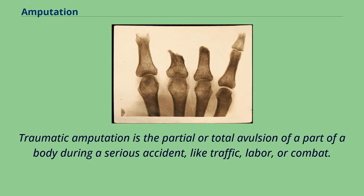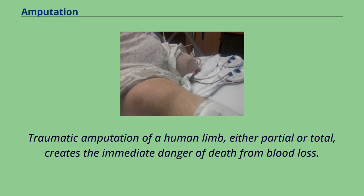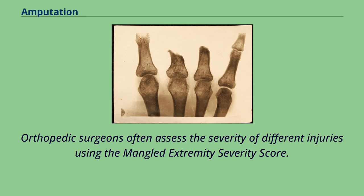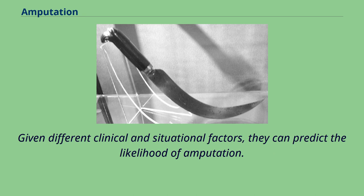Traumatic amputation is the partial or total avulsion of a part of a body during a serious accident, like traffic, labor, or combat. Traumatic amputation of a human limb, either partial or total, creates the immediate danger of death from blood loss. Orthopedic surgeons often assess the severity of different injuries using the mangled extremity severity score. Given different clinical and situational factors, they can predict the likelihood of amputation.